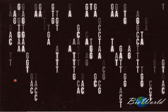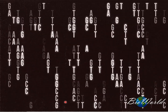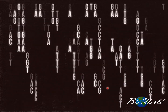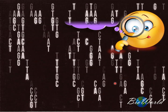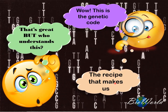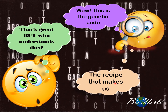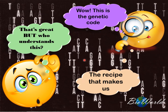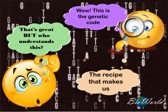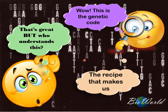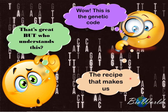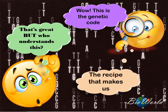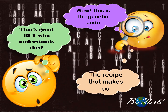Hi there. Any idea what all these alphabets mean? There's A, there's G, there's C, there's T. Well, that's the genetic code, the recipe that makes us. But the question always is, what does this combination of nitrogen bases really mean? Who understands it? Follow me on Bioworld to find out which part of our cells can interpret the meaning of the genetic code.